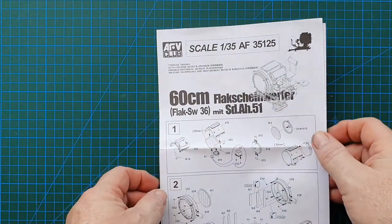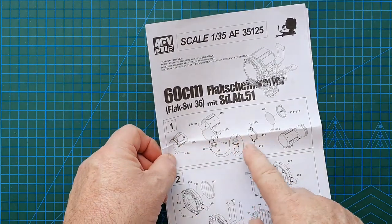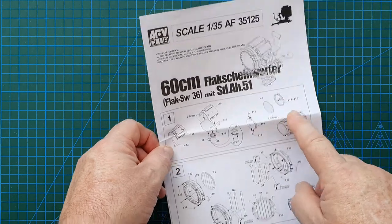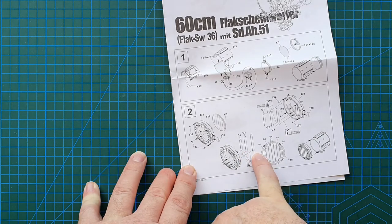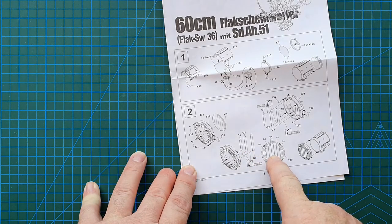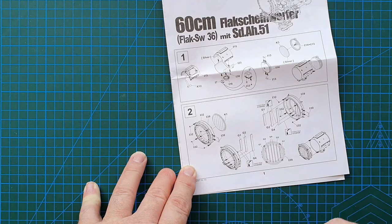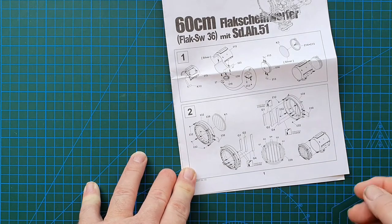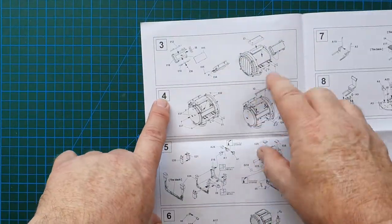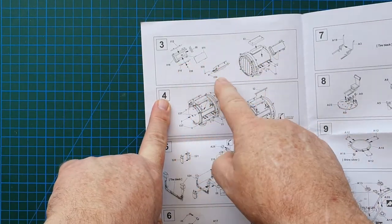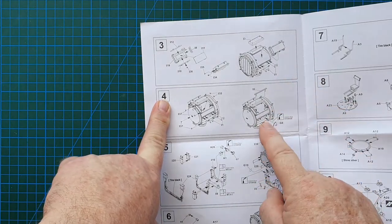No decals in this because they didn't have any. Let's have a look at the instructions. Fairly straightforward - build the body first, clear parts, reflector. This will be the tricky part - putting the veins on the front of the searchlight. The veins are basically open, closed, and protect the searchlight during when it's not in use. Then we get to searchlight parts, connectors etc. - this is basically where the power supply was connected to the searchlight.